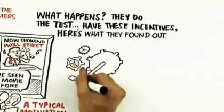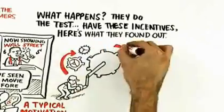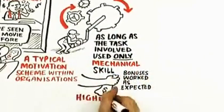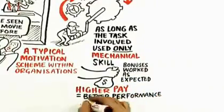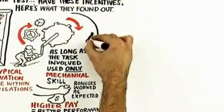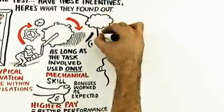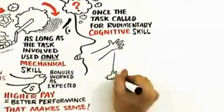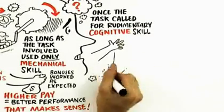As long as the task involved only mechanical skill, bonuses worked as they would be expected. The higher the pay, the better their performance. That makes sense. But here's what happens. But once the task called for even rudimentary cognitive skill, a larger reward led to poorer performance.